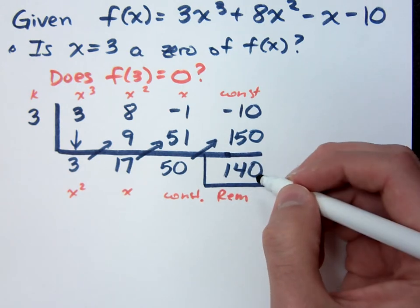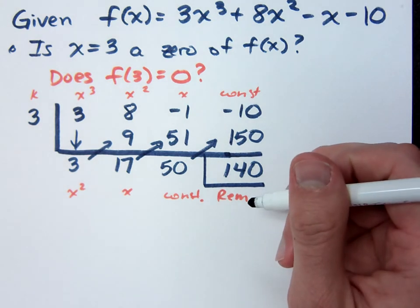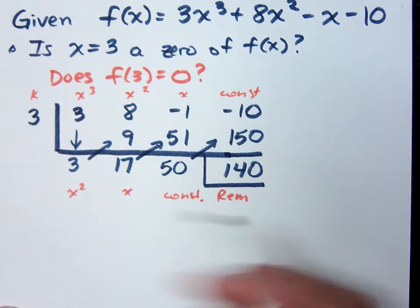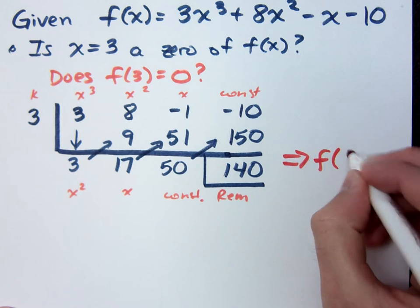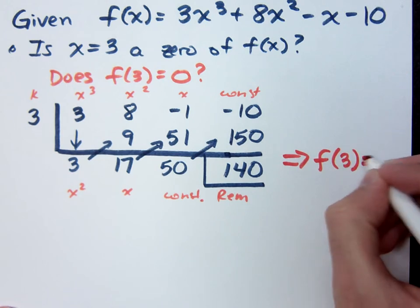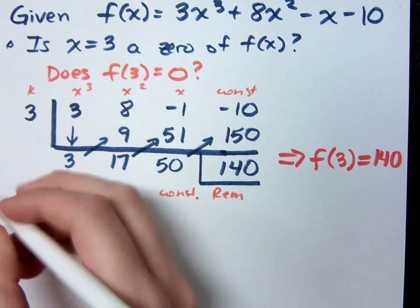I get a remainder of 140. So this is sort of wrong. Is x = 3 a zero? It's not. What I can conclude from this though, is that when I take my function f evaluated at 3, it doesn't equal 0, but it equals 140. Do you buy that? I'd buy that for a dollar.